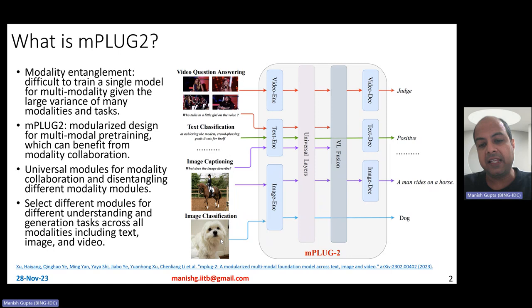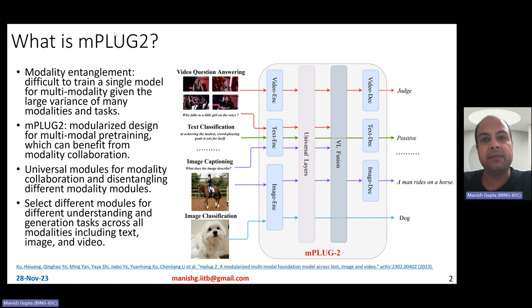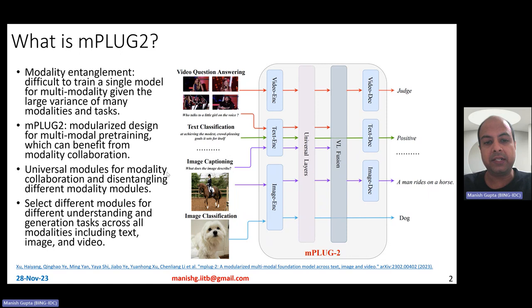If it is basically just an image task and does not involve any text, you can avoid making use of any text encoding and simply produce a label. Depending on what the particular task is and what modalities it involves, you may invoke certain modules and not others. That's the kind of design MPlug2 has — an architecture that enables multimodal collaboration while avoiding the multimodality entanglement problem.